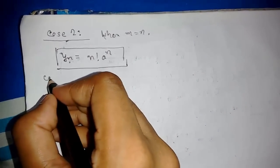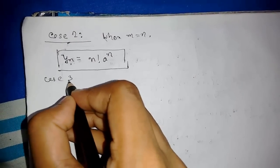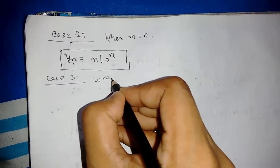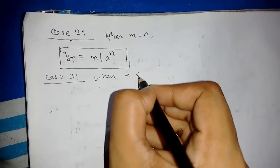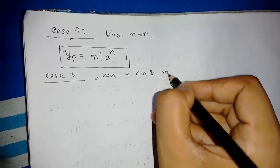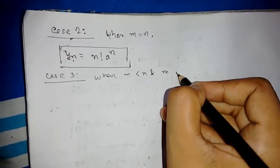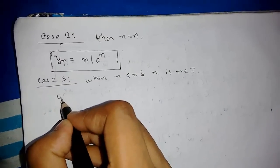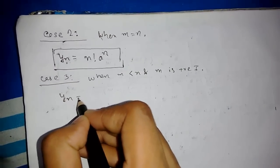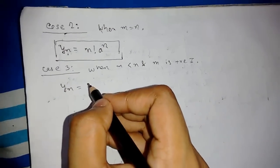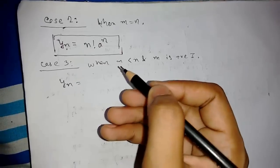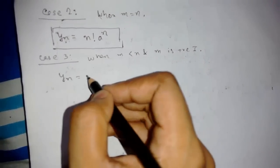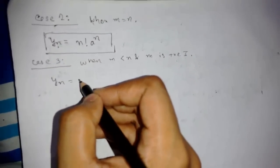Now Case 3: this is when m is less than n. In that situation the result will always come out as 0.